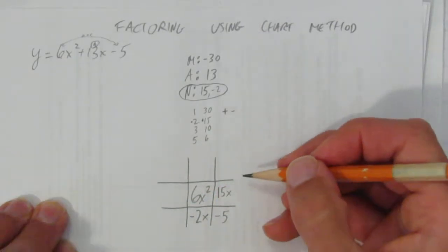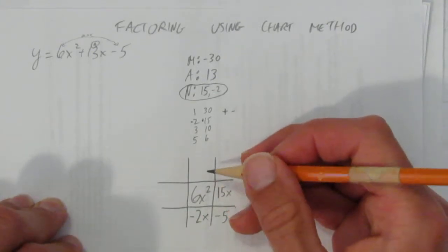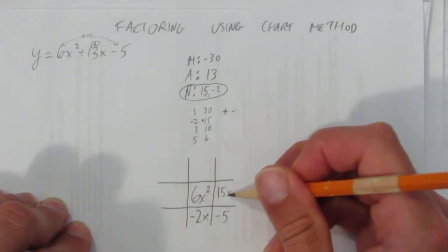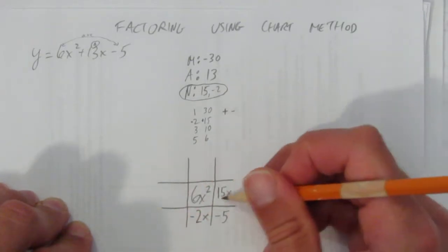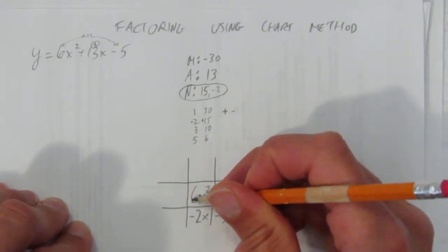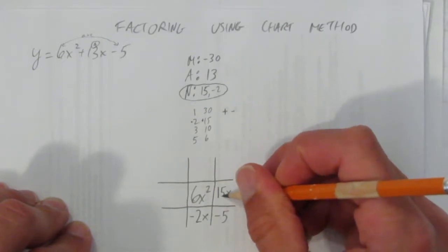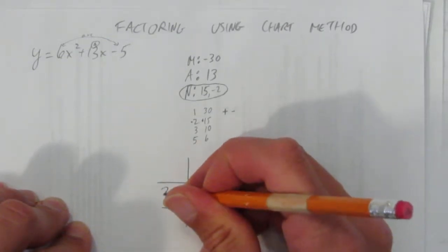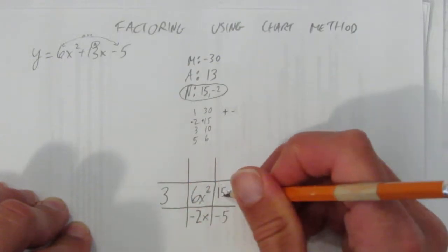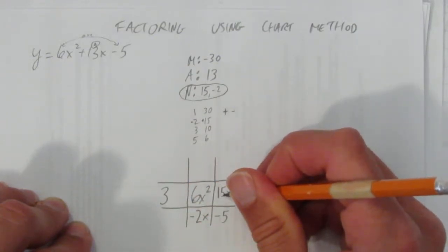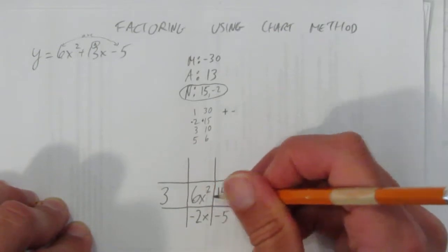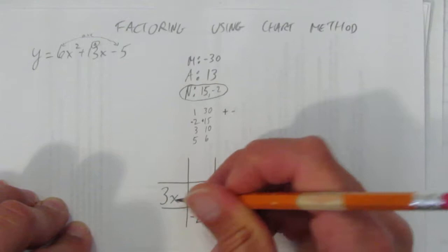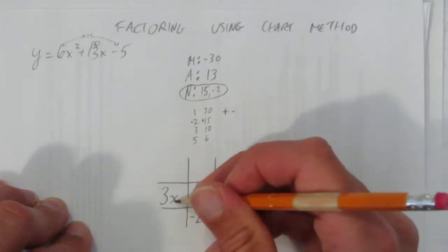What we're going to do now with this chart method is factor the rows and columns. Let's start with this row. We're trying to find the common factor in this row. What goes into 6 that also goes into 15? 6 is divisible by 2, but 15 isn't. 3. 3 goes into 6, and it also goes into 15. Also, x squared and x have a common factor, in this case x.